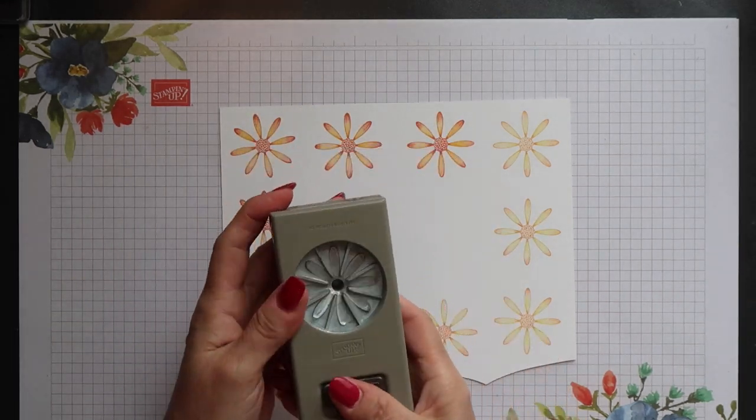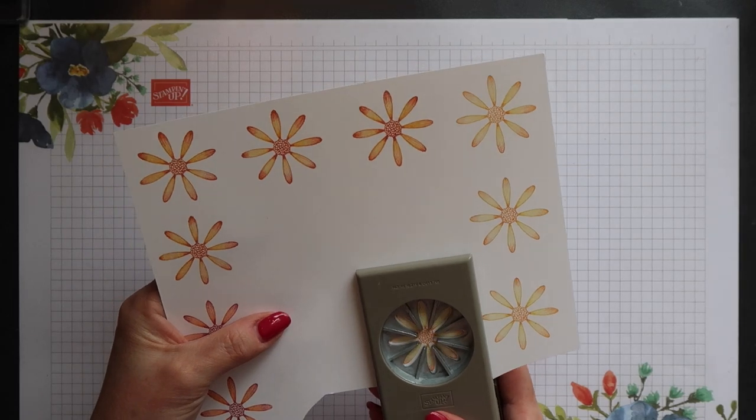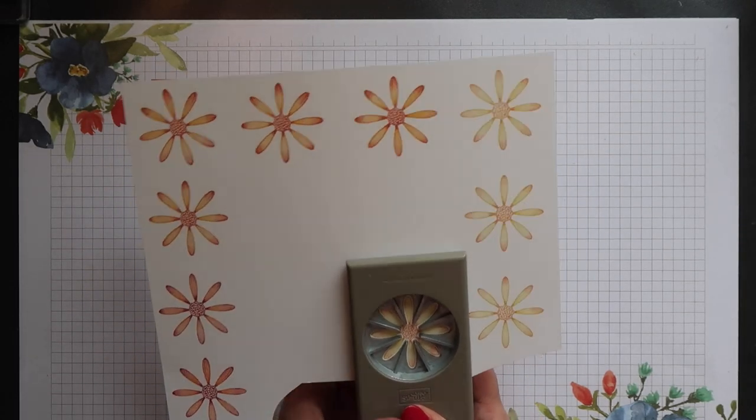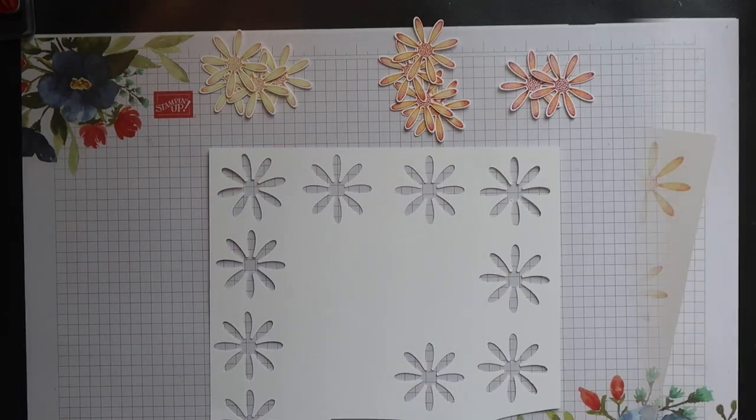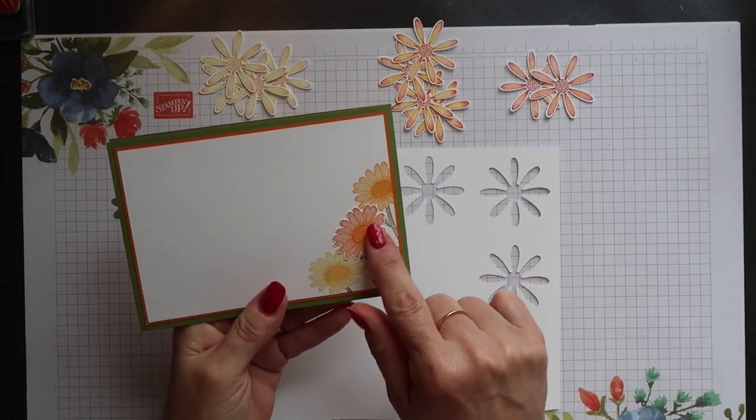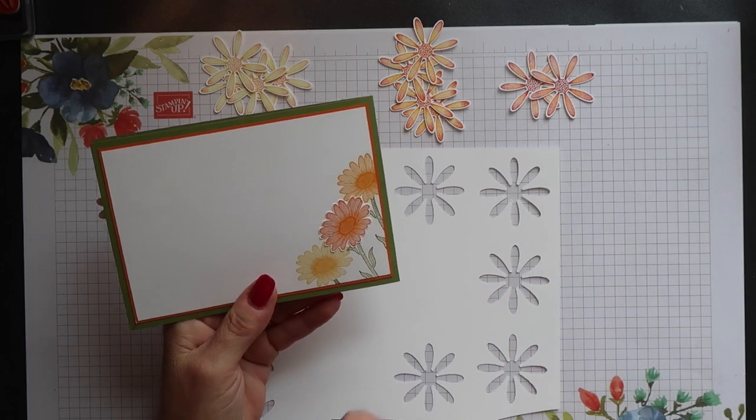All these daisies need to be punched out using the new Medium Daisy Punch. On the back panel of my original card, there's one daisy that I've stamped and then cut out by hand.